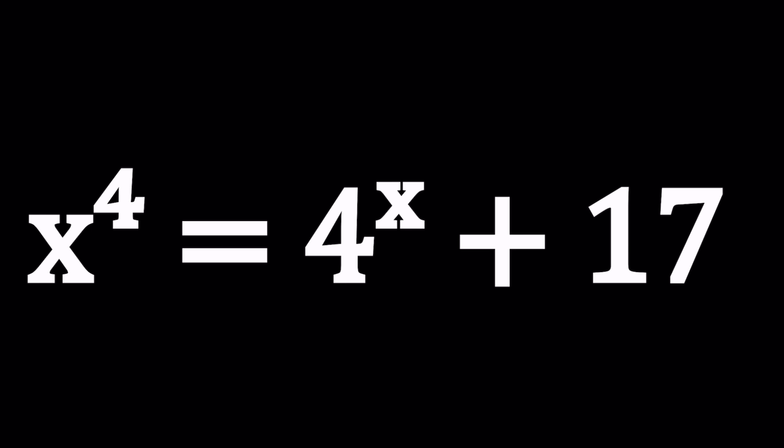We have x to the fourth power equals four to the power x plus 17. And we're going to be solving for x values. And x needs to be an integer, not any real number.